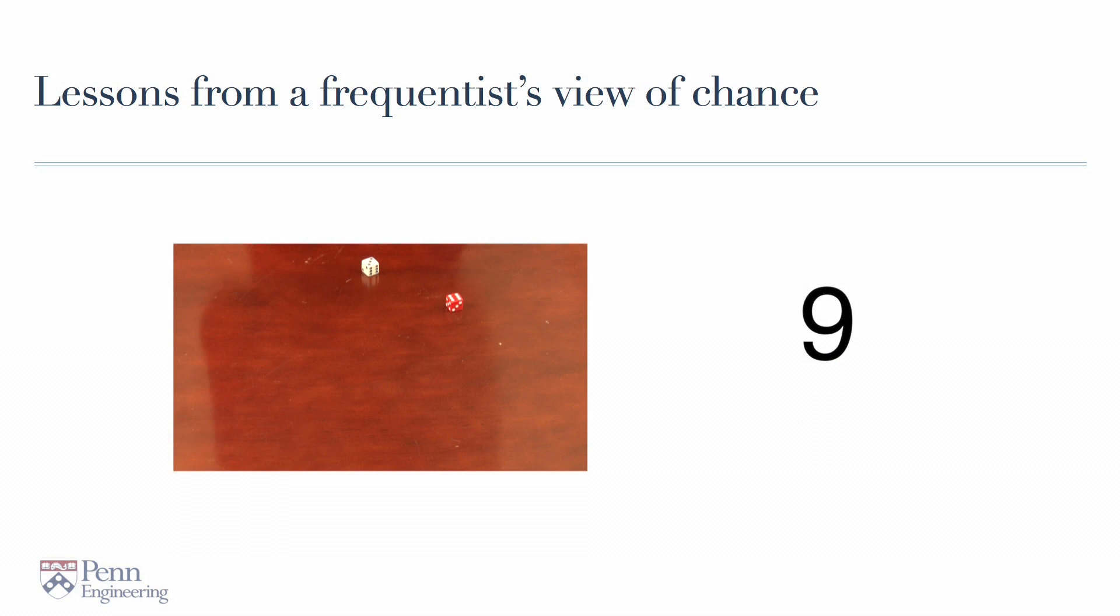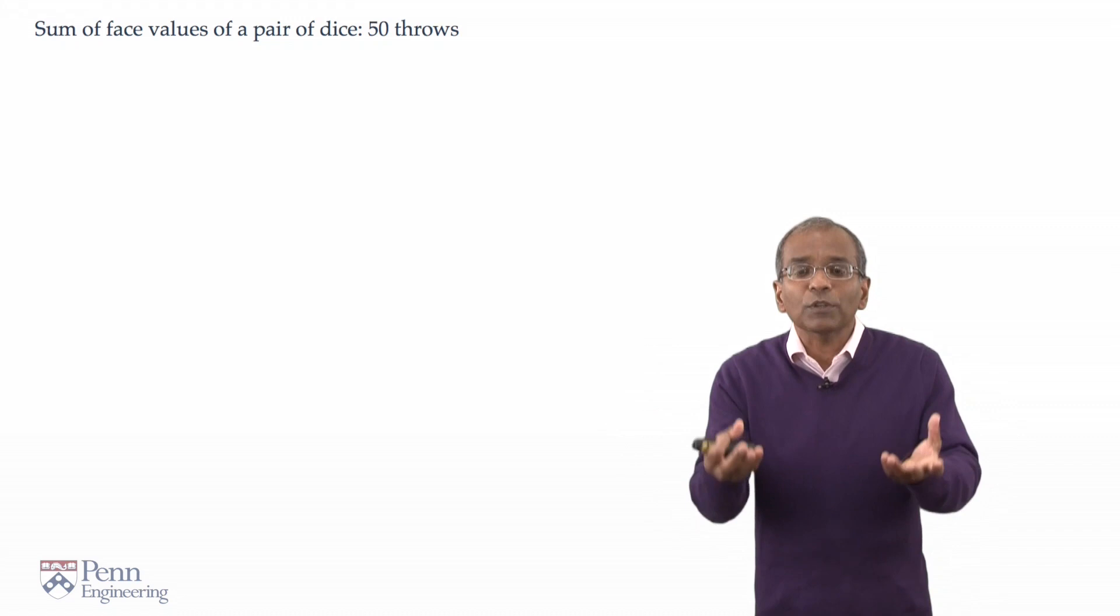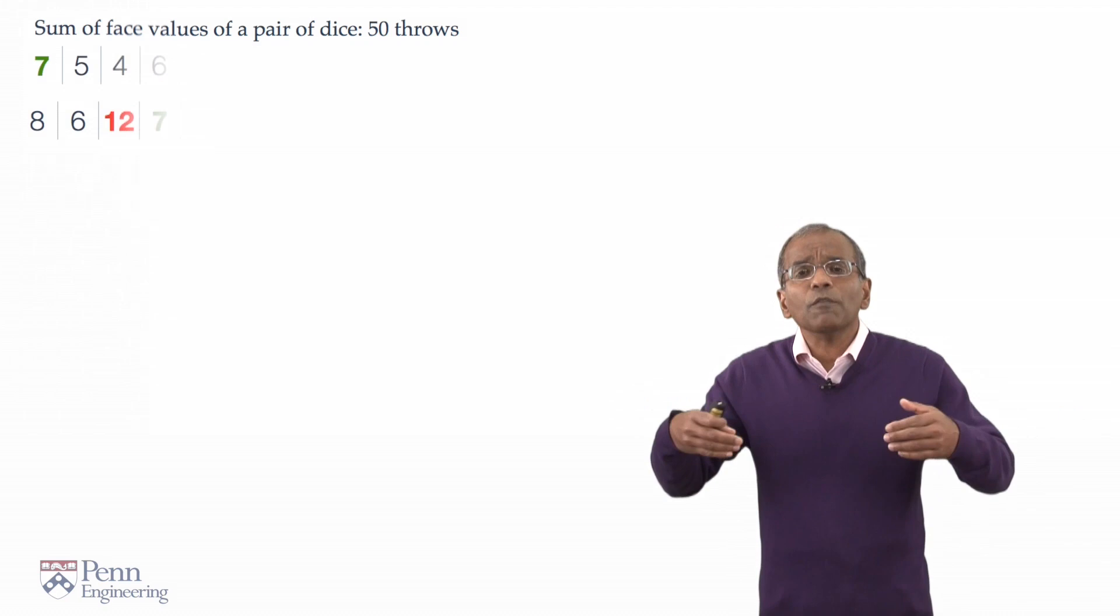Imagine that we have 50 crap games going on at the same time, 50 games of craps. And in each of them, the dice have been thrown for the first time. Here is now a listing of the kinds of outcomes you might see for this projected experiment.